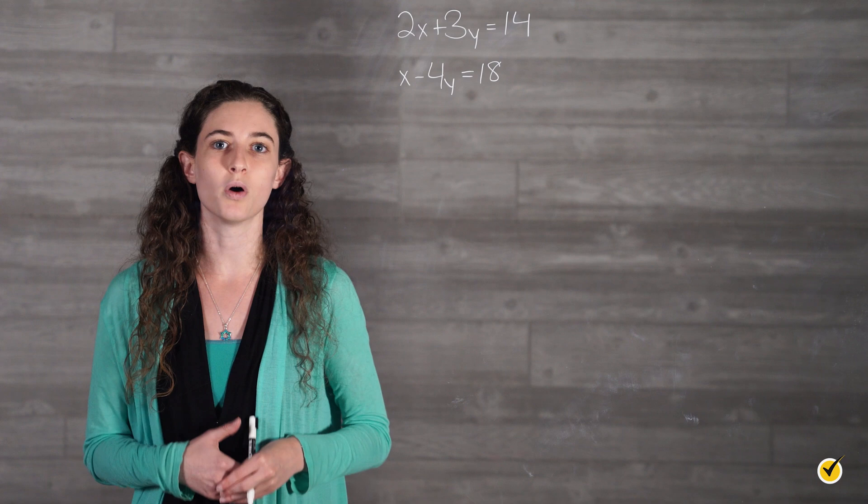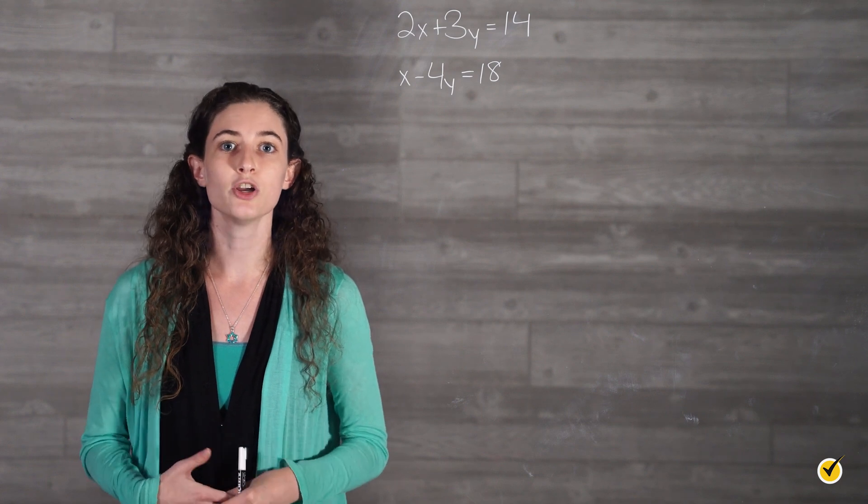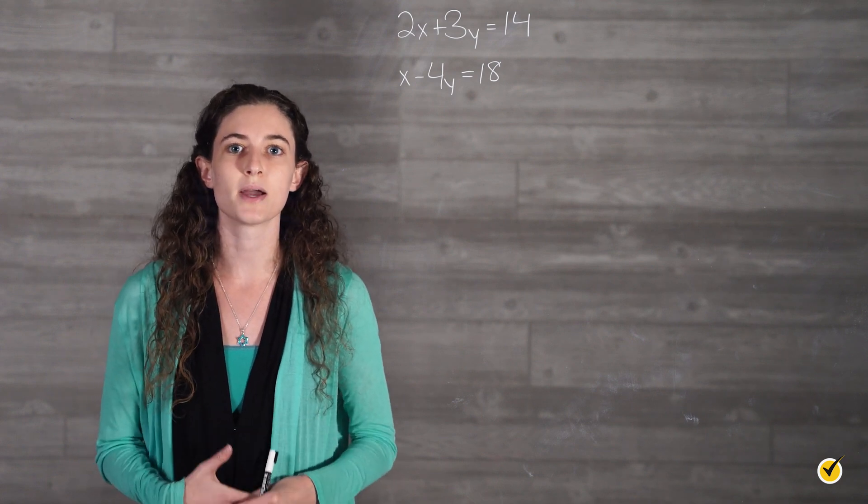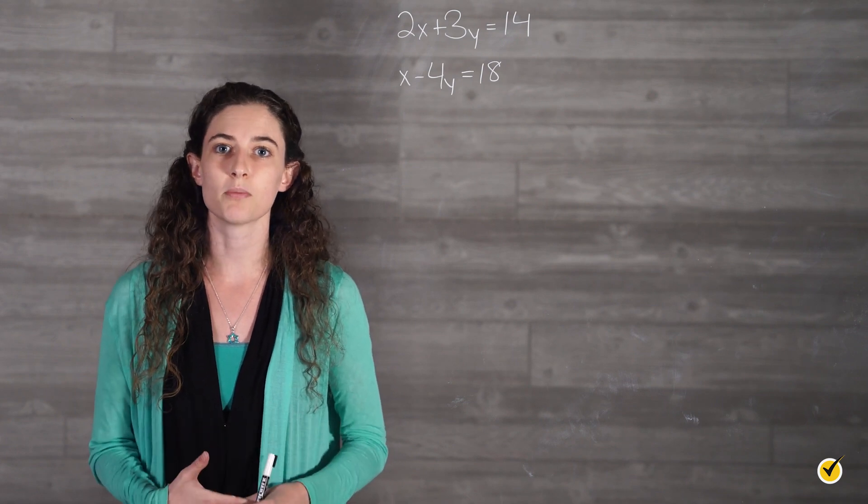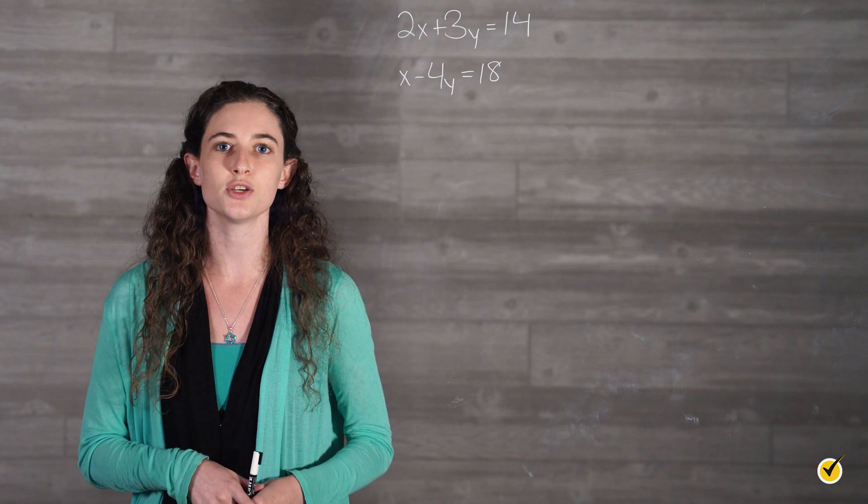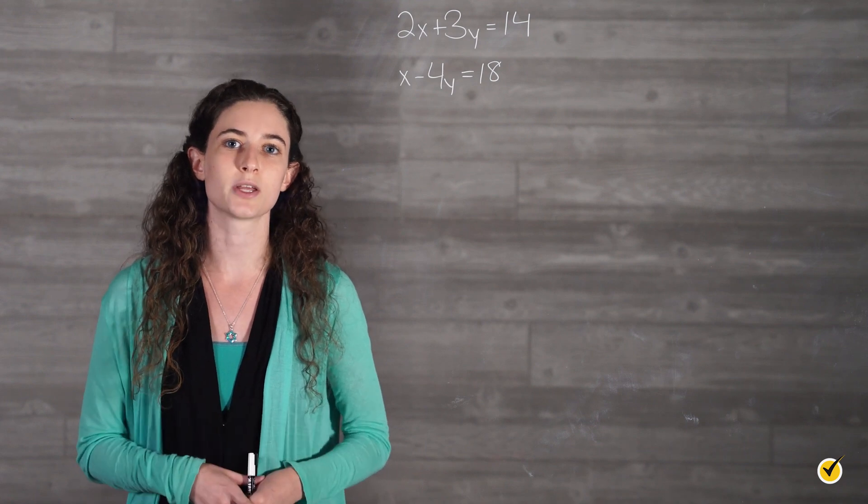So we are going to need to multiply one of our equations by some number so that we can add or subtract them and get rid of either the x term or the y term. For this problem, we can multiply the second equation by 2 and then subtract to eliminate our x terms.